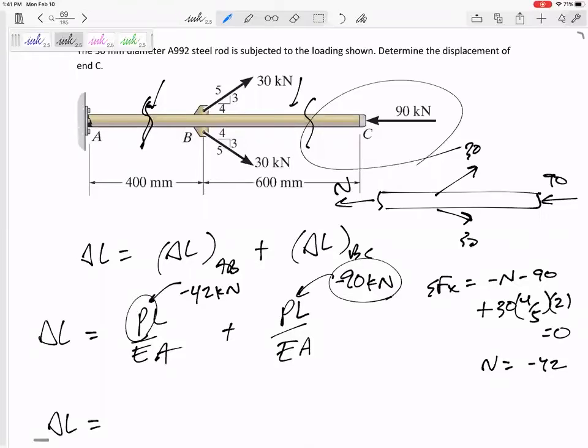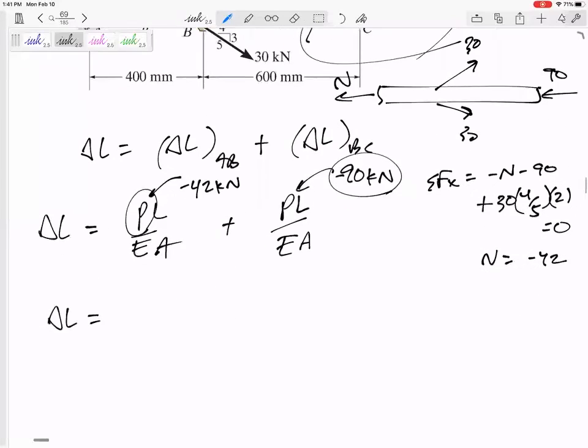So however you need to get to this point, you need to be able to solve that there's a compression of 42 kilonewtons inside section AB, a compression of 90 kilonewtons inside section BC. And so I will say negative 42,000, the length 400 millimeters, over the E.